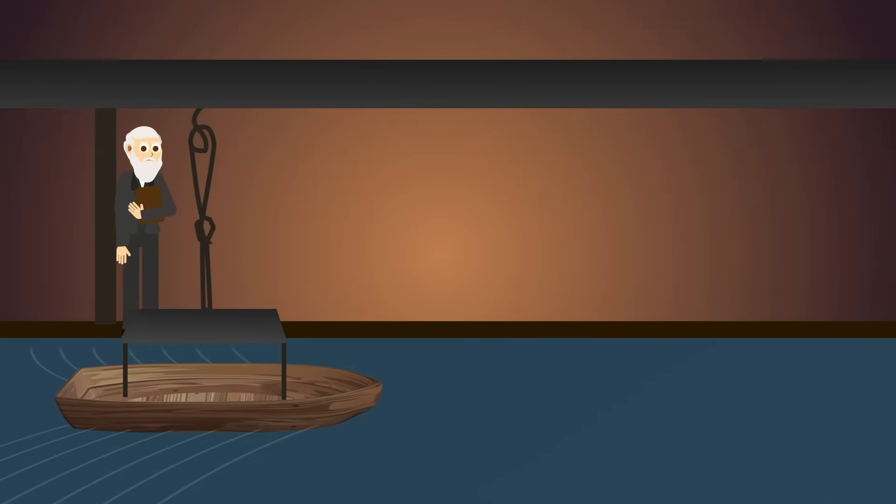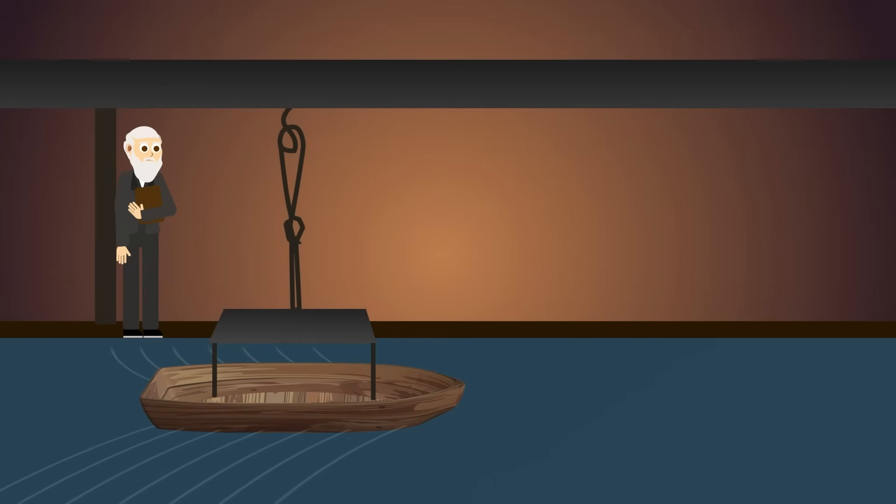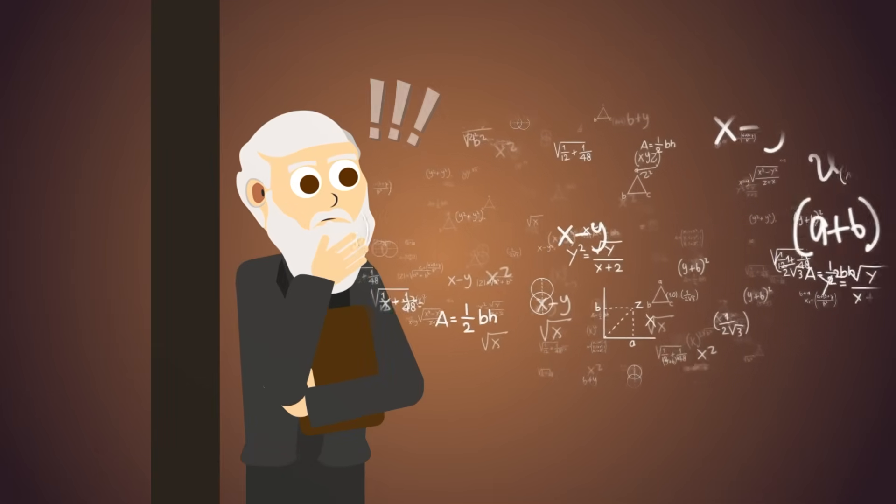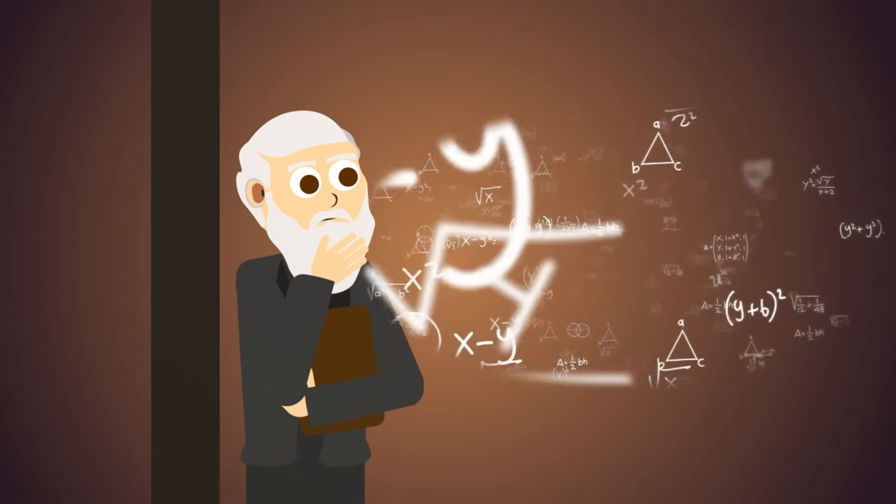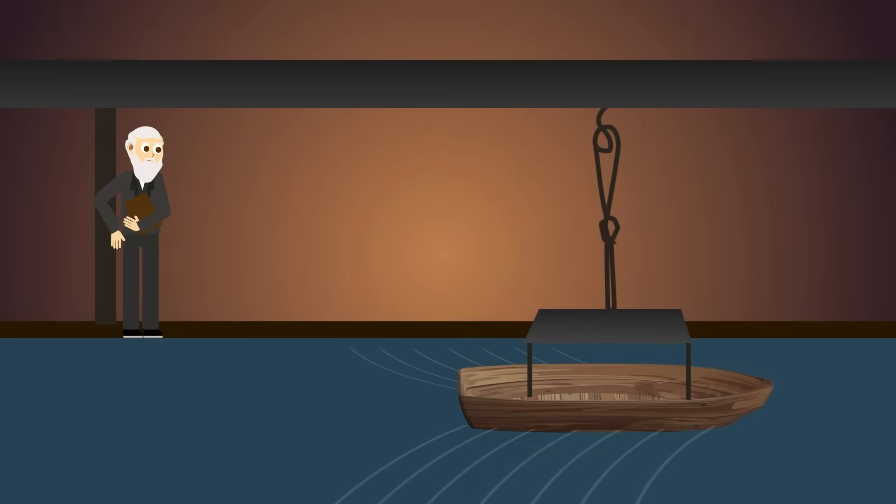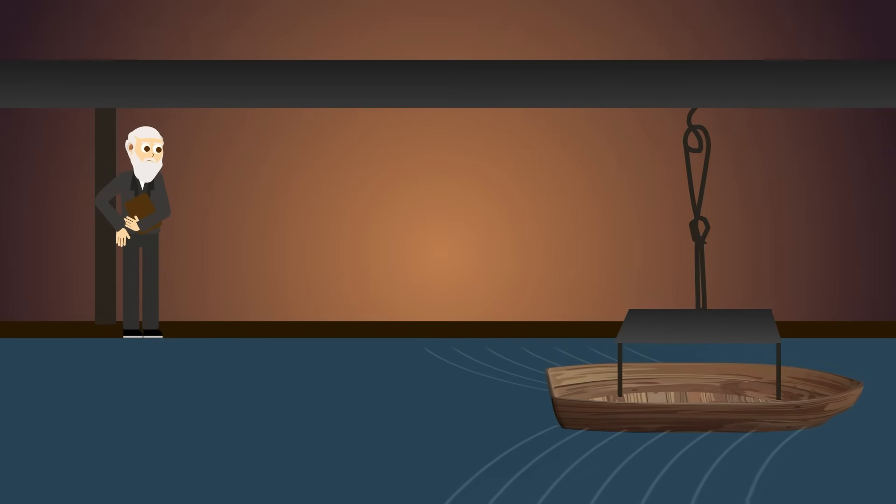He towed small hulls through the water, observing their behavior. From this, he uncovered a powerful hypothesis. If the maths is right, a model can tell you everything about a full-sized ship.